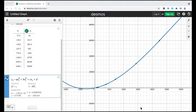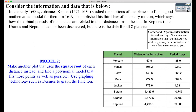Now for our second model. What we want to do is make another plot that uses the square root of each distance instead. So for the first model we used the distance directly; now we're looking at the square root of each distance, and once we do that, we want to find a polynomial model that fits those points as well as possible. Think about any unknown information you find, organize it in a way that makes sense to you, and pause the video for as long as you need. Once you're ready, come back and we will review.